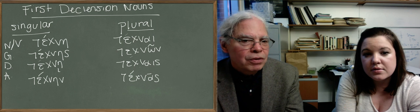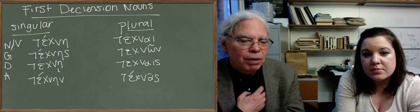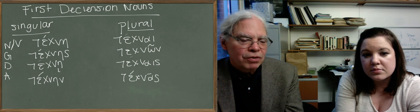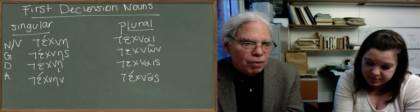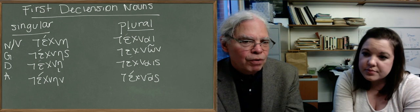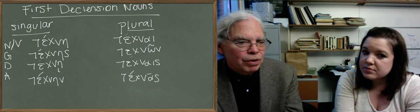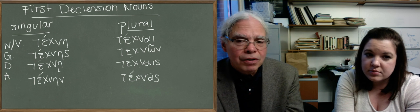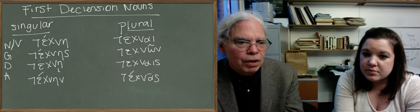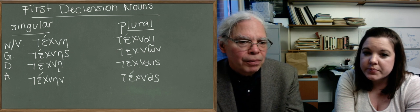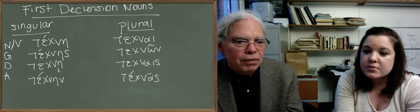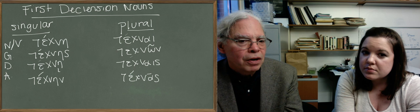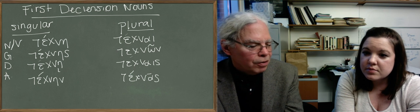In the plural, the functions of the cases are the same, only you're talking about more examples of it. So technai, technon, technais, technas. You may notice that Greek words, so far anyway, and generally end with vowels, and sometimes with consonants like s and n. There aren't a whole lot of sounds that Greek words can end with. So the suffixes are relatively simple. Most of them are vowels, and a few have these consonants after them.